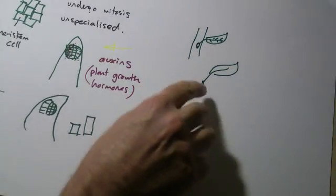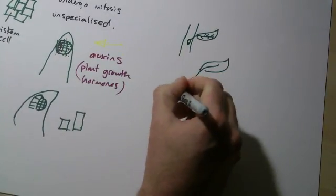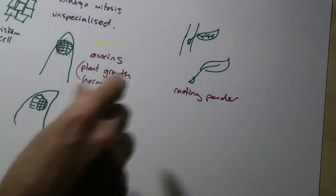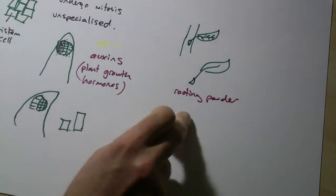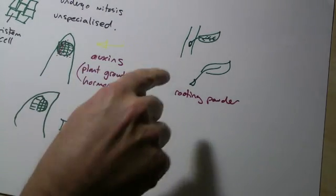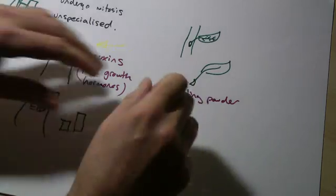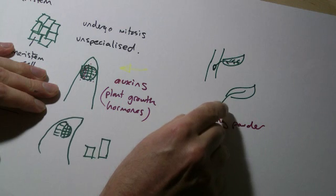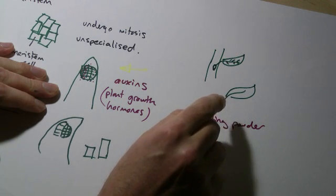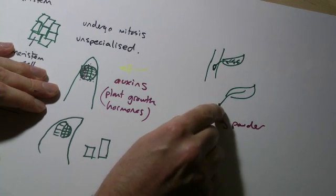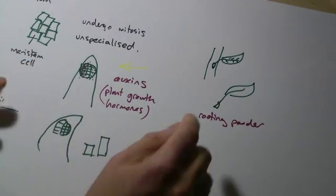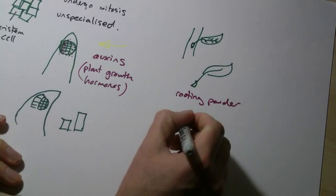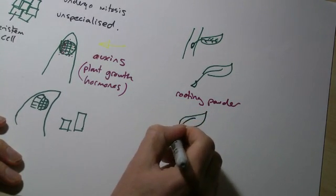What we do is dip this end in rooting powder. This is that kind of white powder you got if you remember doing it. Rooting powder contains auxins or another type of plant hormone and what it will do here, as well as promoting growth, as well as making these cells here, because there are meristem cells actually sitting in here as well, as well as making them grow, they will specialize them and they will start to develop into root cells.